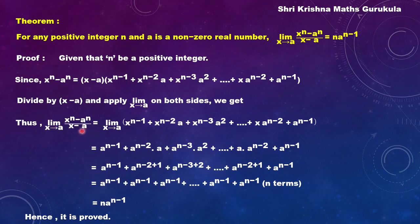Our final result is: the limit of x to the power n minus a to the power n by x minus a, as x tends to a, equals n into a to the power n minus 1. We have proved this only for positive integer n, but this standard form holds good for any rational number — keep this in mind when you apply it. If you have any doubt, please let me know in the comment section and I shall try to help you out.